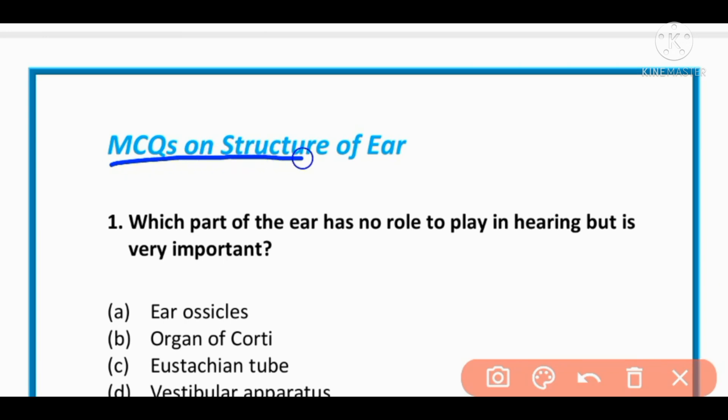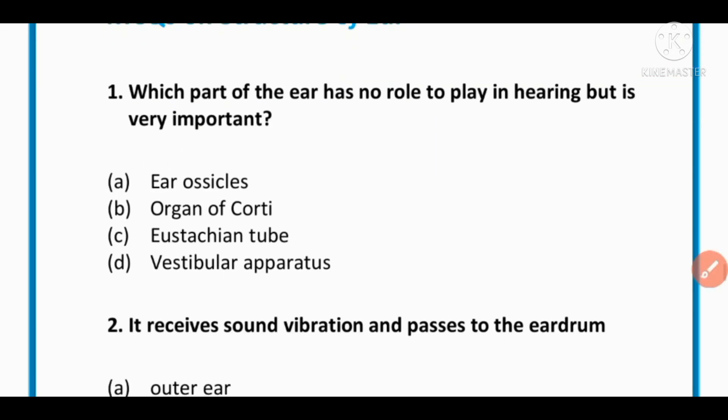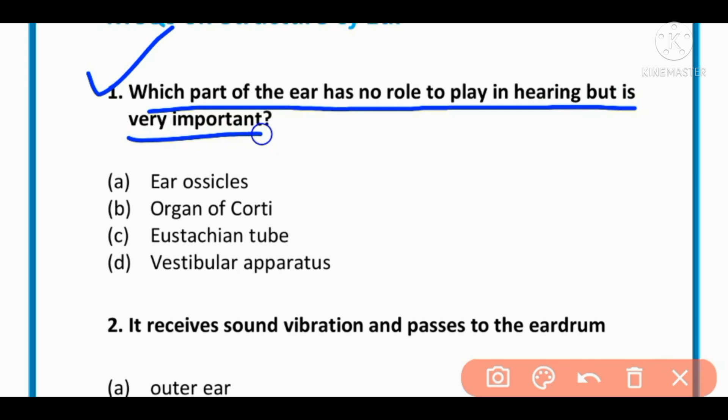MCQs on structure of ear. MCQ number 1: Which part of ear has no role to play in hearing but is very involved? Ear ossicles, organ of Corti, eustachian tube, or vestibular apparatus. The correct option is D: vestibular apparatus, which has no role to play in hearing.